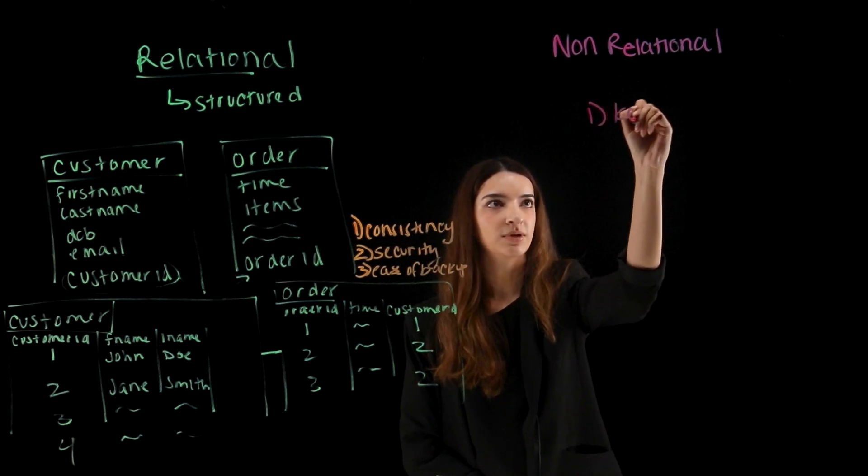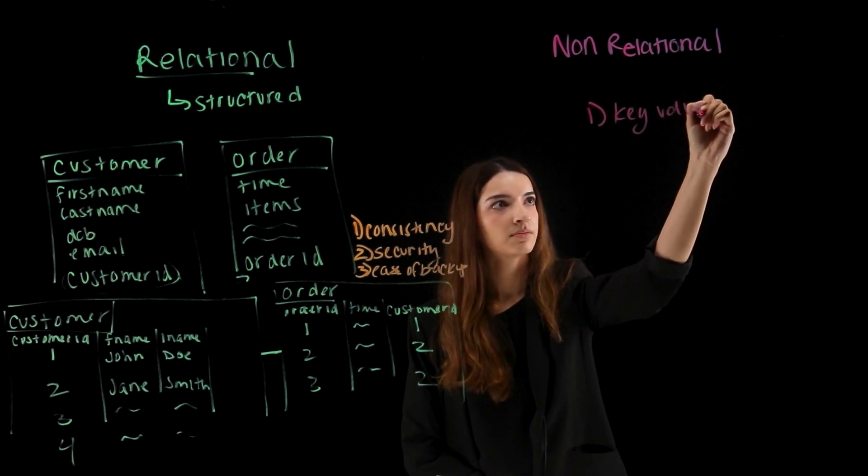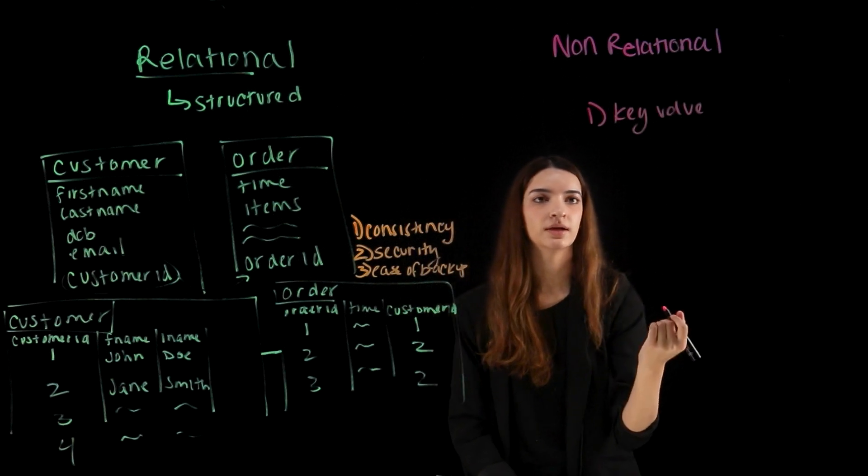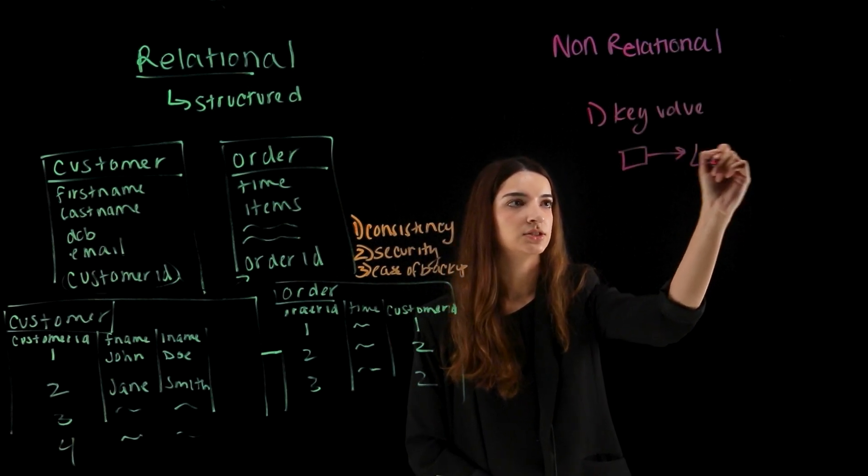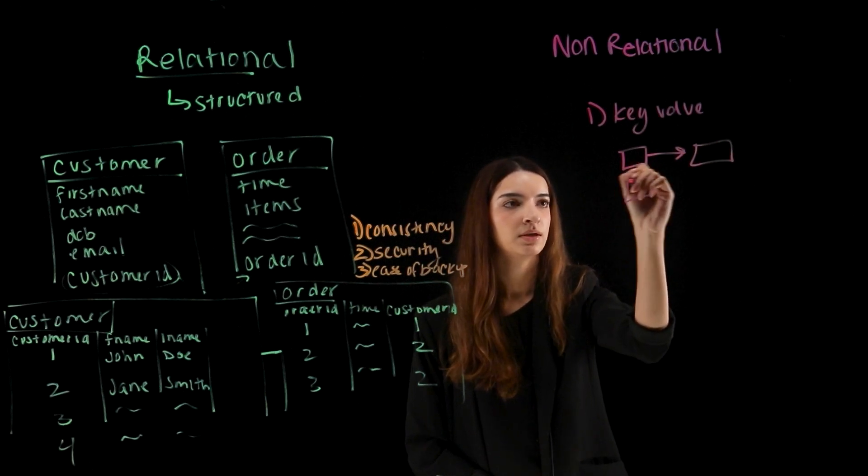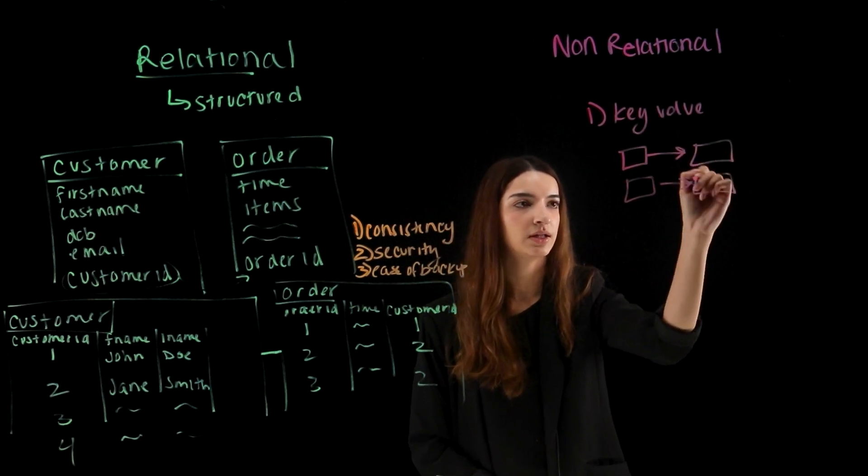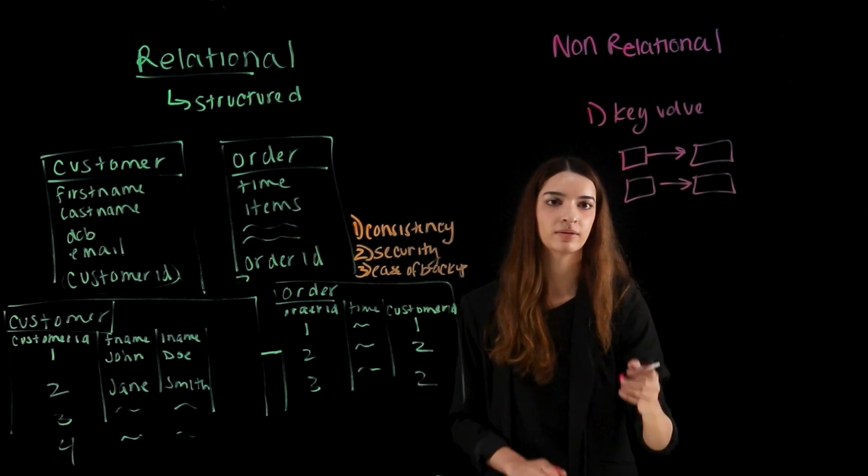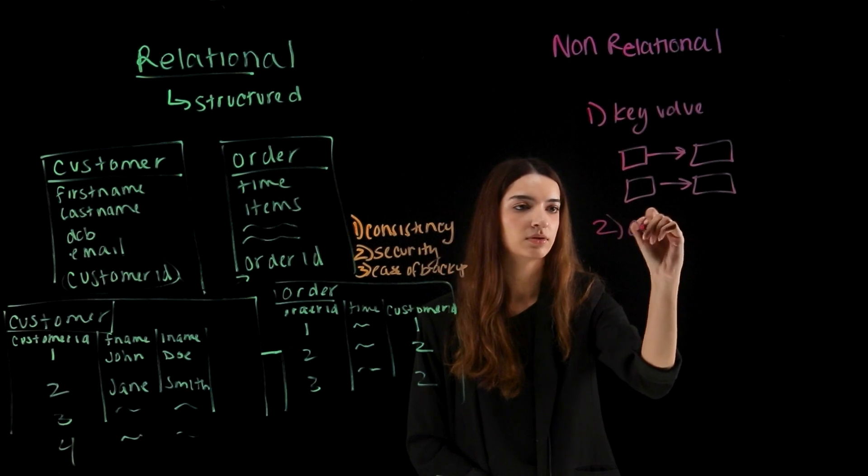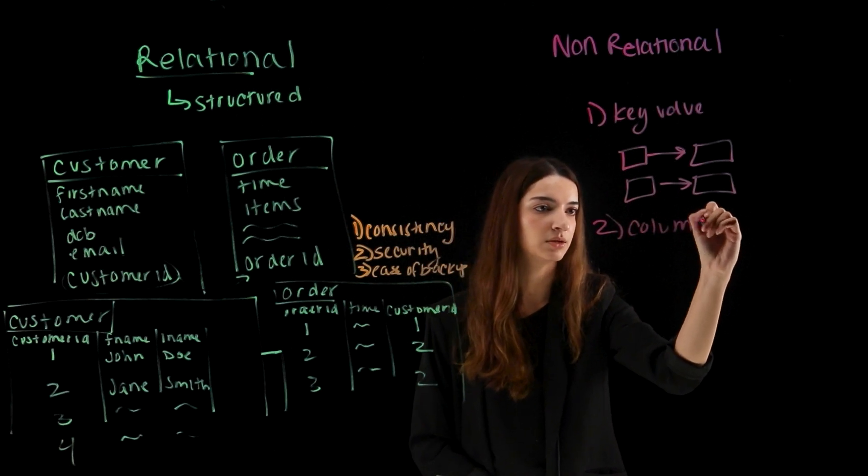First, we have key value databases. And this shows data as a key and a value, right? We have one key that ties to one unique value, another key that ties to another unique value, and you can retrieve these values through plugging the keys and getting that information back. We also have column store databases, and this stores data in separate columns and is optimized for performance.